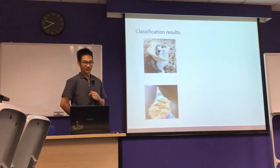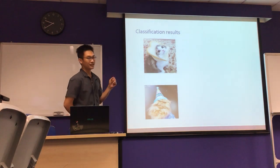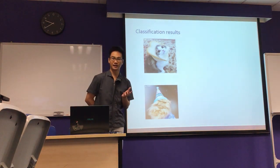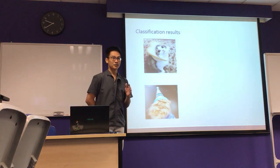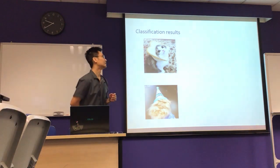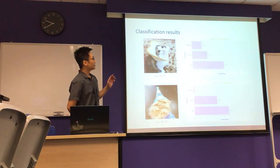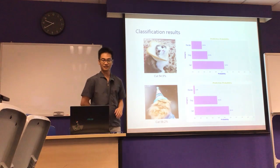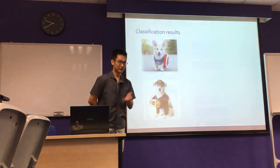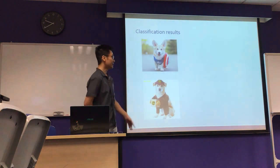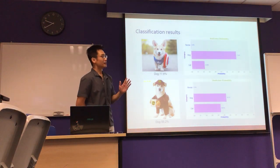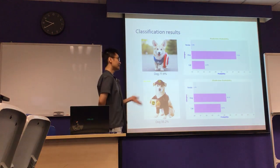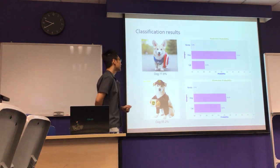So I started to be adventurous and tried some different images. However, the simple neural network model was unable to classify them correctly. So I tried the CNN model, and the CNN model was able to make the correct classifications. CNN is known to be good at image classification, and it was able to classify them correctly.